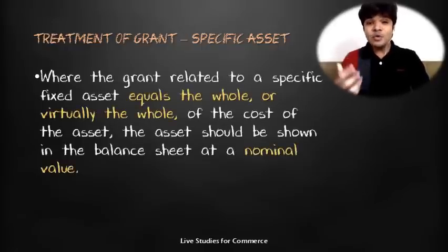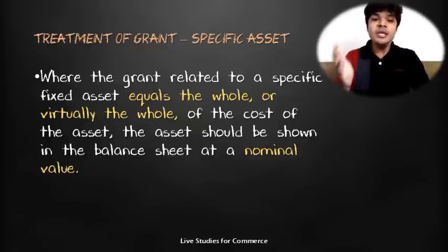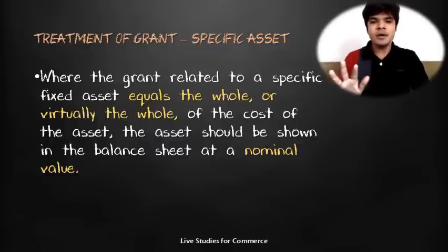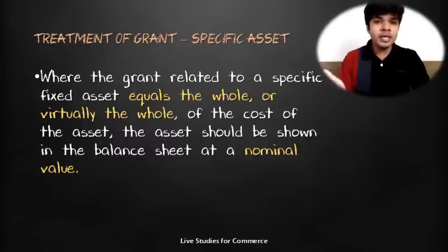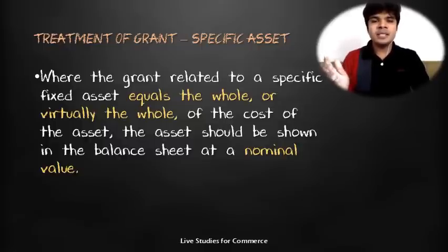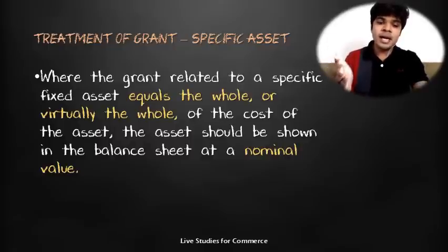Where the grant related to a specific fixed asset equals the whole or virtually the whole cost of the asset, the asset should be shown in the balance sheet at a nominal value. For example, if your asset is ₹5 lakh and the government gave you the entire ₹5 lakh as grant, practically the asset is free for you, but it still must be shown in the balance sheet at a nominal value of say ₹1,000, ₹2,000, or ₹3,000, and in the notes to accounts you can mention that a grant equal to the full cost of the asset was received.